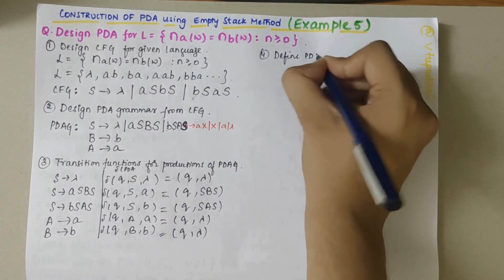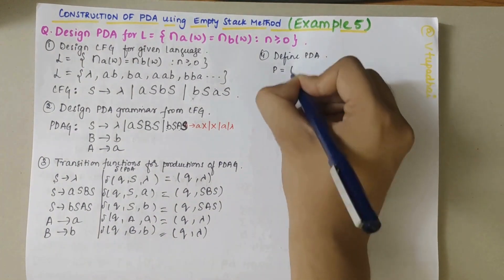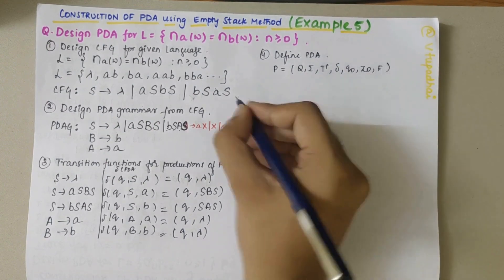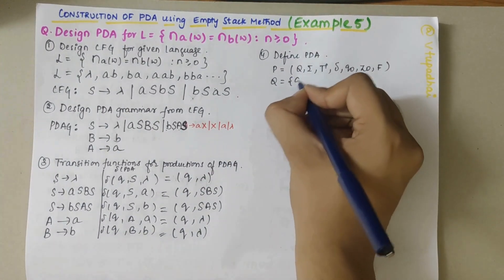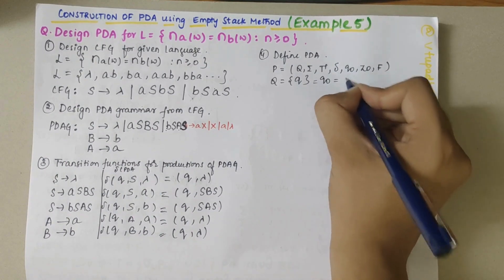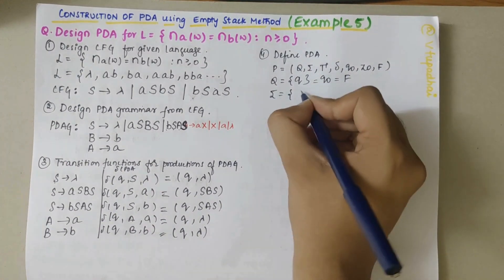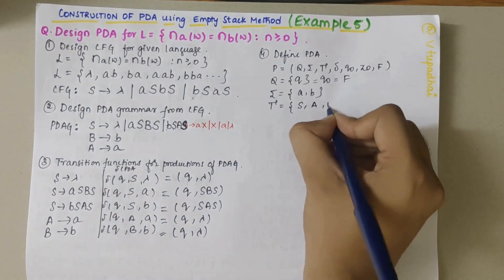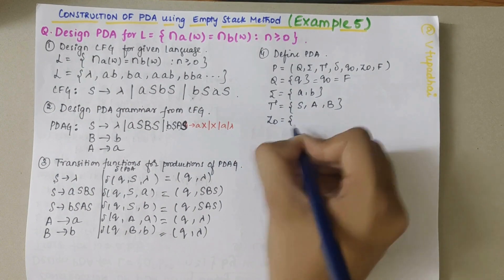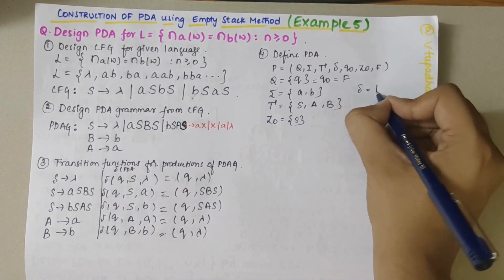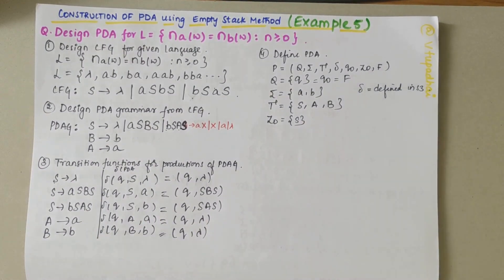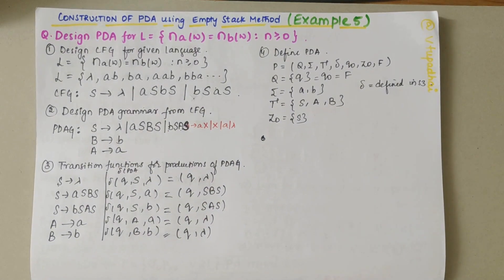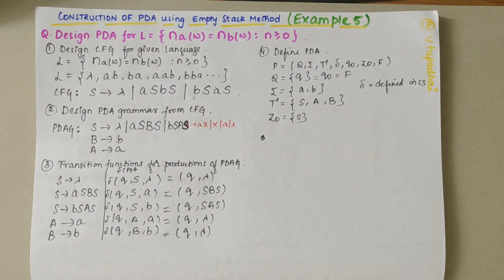The fourth step is to define the PDA formally. P = (Q, Σ, Γ, δ, q₀, Z₀, F), where Q comprises the states. Here only one state is used, which serves as both the start state and final state. The alphabets used are A's and B's. The stack symbols considered are S, A, and B. The start state is S, and the transition function is as defined in step 3. That completes the PDA design. I hope you have understood how to design a PDA for the given language. If you have any doubts, let me know in the comments and subscribe to my channel.